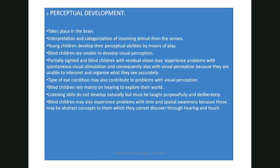Children who are blind will start developing far more of their auditory perception — the ears become much more important, and hearing becomes very sensitive, used to compensate for inadequate vision. But we also need to teach listening skills. We need to teach children to listen accurately, purposefully, and deliberately — it is not something that will just automatically happen. Teachers and parents will be taught to tell children: 'Listen to me, I'm talking to you — listen to this, don't listen to the background.'